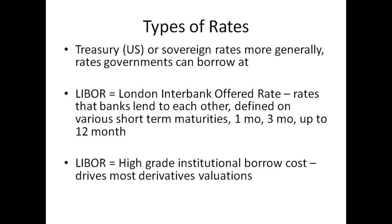There are sovereign rates — often the U.S. treasury rate, but it can be any large country's government bond rate. The treasury or sovereign rate is the rate at which a government can borrow. It's usually assumed that a government will not default on a loan in its own currency, as it can print currency to pay off that bond and can raise taxes. So the sovereign rate is generally considered risk-free, though historically there have been occasional sovereign defaults.